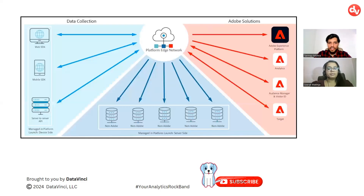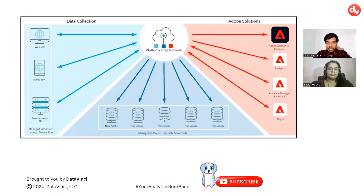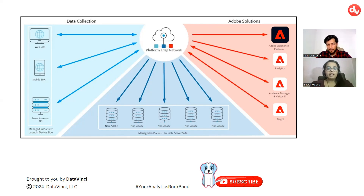Now let's look at the setup in a diagrammatic format. As we can see, we have three basic use cases covered on the left side — Web SDK, Mobile SDK, and Server API. Web SDK is for website implementation. If we are trying to track our mobile application, we will be using the Mobile SDK. For server-to-server communication, we will be using the third part, managed totally by data collection — that is Adobe Launch. After processing the hits, we will be sending them to the Platform Edge Network. We are not sending it directly to the services; we are first sending it to the Platform Edge Network. Once we have it there, we can easily direct it to non-Adobe services as well as Adobe services like Analytics, Audience Manager, Target, and Experience Platform. This makes the entire process very easy.